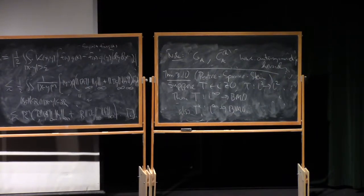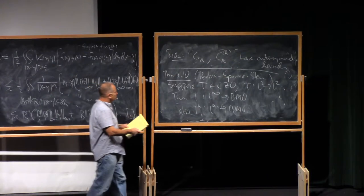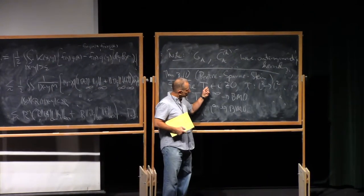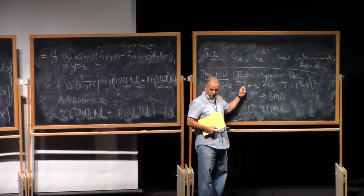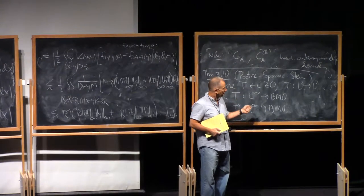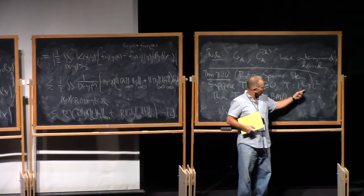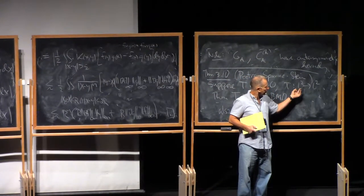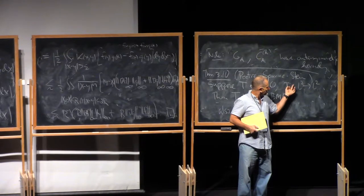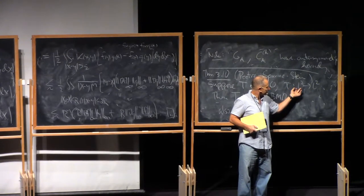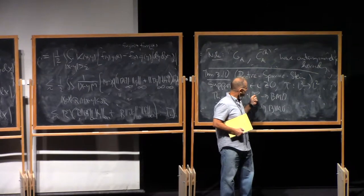So there's one sort of technical issue is for Calderón-Zygmund operators, we originally have defined them as mappings from test functions to distribution, so they're well-defined on C zero infinity. Once you know it's bounded on L2, then it makes the operator make sense on elements of L2, but how do we make sense of it on L infinity?